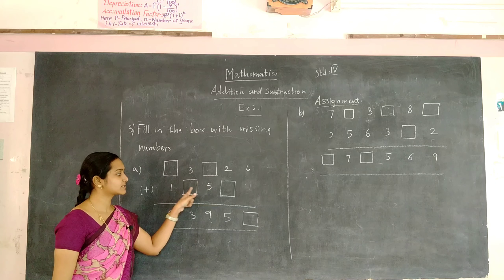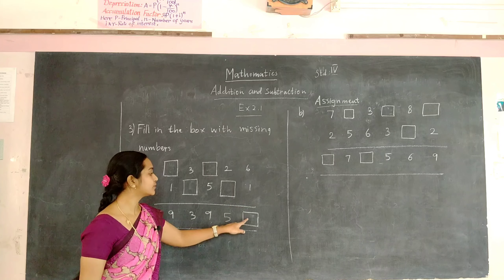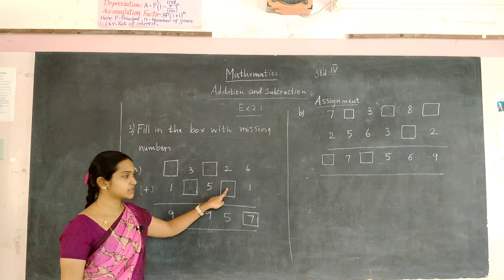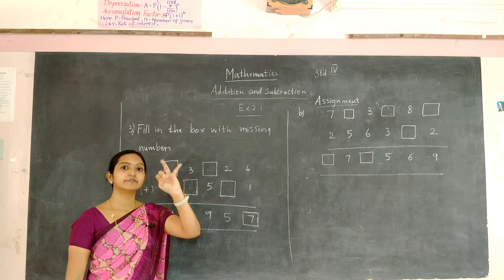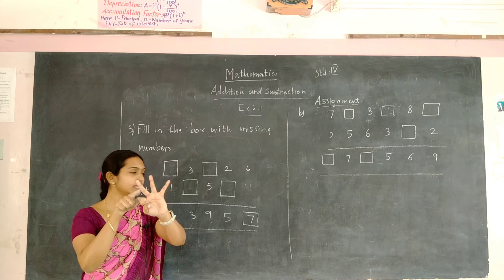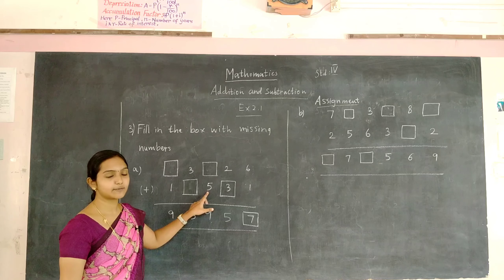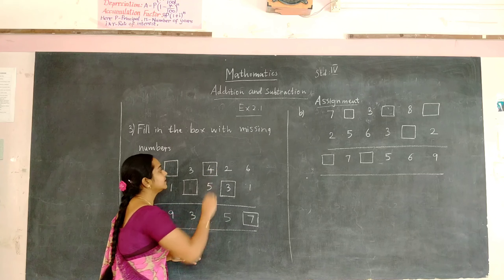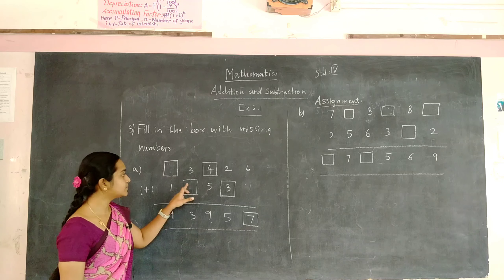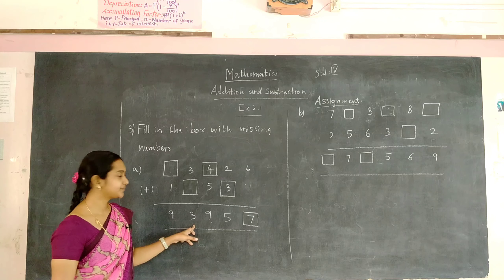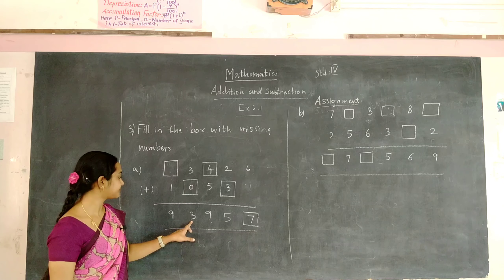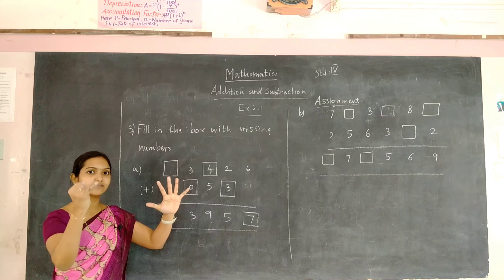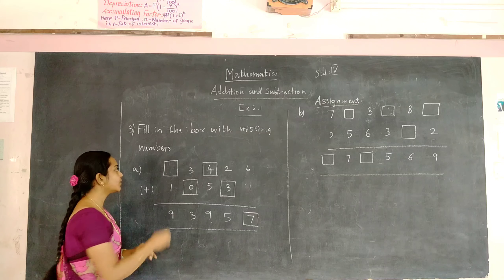Now we are going to fill the boxes with the numbers. 6 plus 1 will be 7, so write 7 in the box. A number is added to 2 to get 5. We have to find the number and fill in the box. Start counting from 2 until you reach 5: that is 3, 4, and 5 — I have 3 on my fingers, so the answer is 3. Now start counting from 5 until you reach 9: that is 6, 7, 8, and 9 — there are 4 on my fingers, so fill it as 4. You have to add a number to 3 to get 3: the answer is 0, since 0 plus 3 will be 3. Now start counting from 1 until you reach 9: that is 2, 3, 4, 5, 6, 7, 8, and 9 — I have 8 on my fingers, so fill the box with 8.